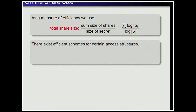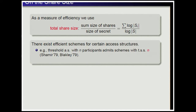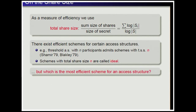There exist efficient schemes for certain access structures. For threshold access structures on N participants, Shamir and Blakley presented schemes with total share size N. We know that N is the best possible total share size — the lowest achievable — so schemes achieving it are called ideal. But not every access structure admits an ideal scheme, and in general it is not known which scheme is most efficient for a given access structure.